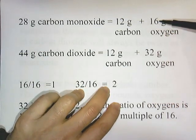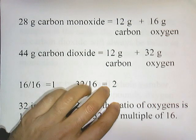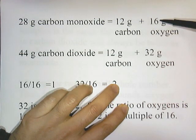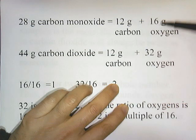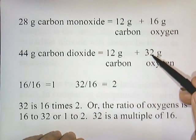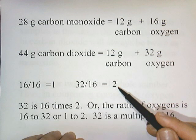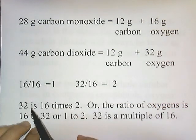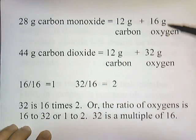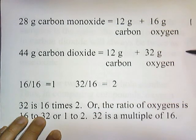Now we're going to compare the oxygens and see if there's a ratio between the two. The smaller value is 16, so I'm going to divide both of these numbers by 16. 16 divided by itself is 1, and then 32 divided by 16 is 2. So 32 is 16 times 2, or the ratio of oxygens between these compounds is 16 to 32, which is a 1 to 2 ratio.